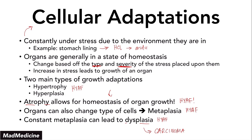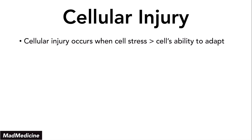That covers cellular adaptations. What happens when our organs are not able to handle the stress placed upon them? What happens when growth adaptations like hypertrophy, hyperplasia, and metaplasia are not able to accommodate the stress on the organ? At that point, we're going to see cellular injury occurring — and that is the topic of this lecture. Cellular injury occurs when the cell stress exceeds the ability of the cell to adapt, and when that happens, you're going to see injury and damage occurring to the cell, which causes a myriad of downstream effects we will discuss in subsequent lectures.